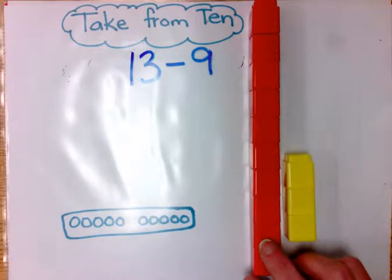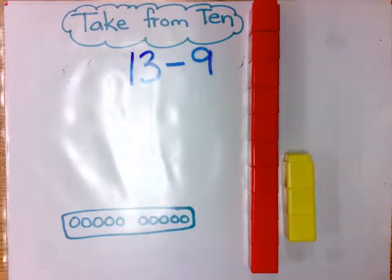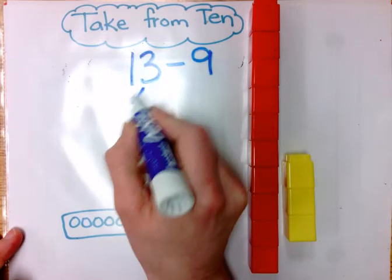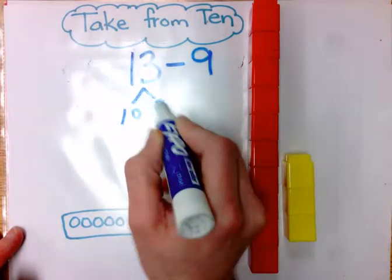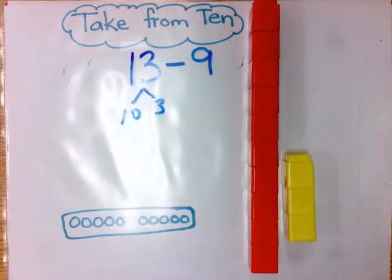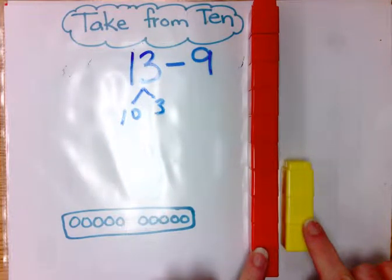students show 13 as 10 and 3. That's an easy idea for them because they've been working on their teen numbers as 10 and some 1s since kindergarten.